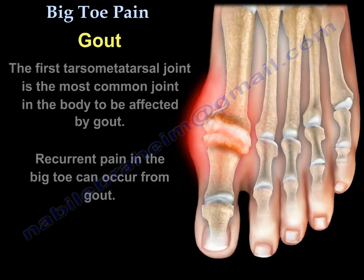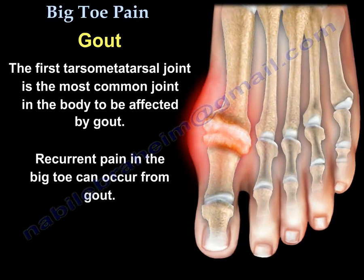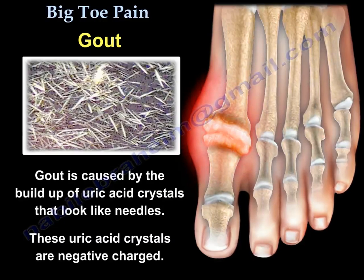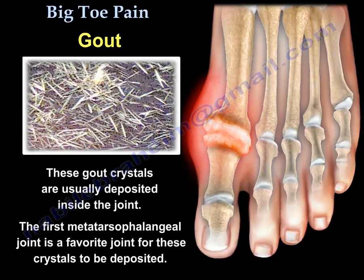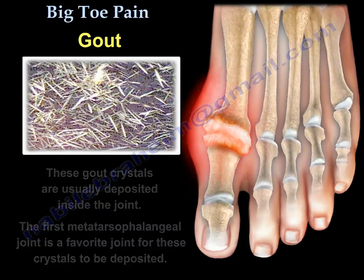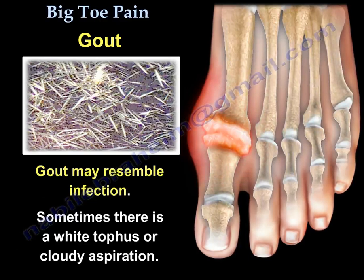The first metatarsophalangeal joint is the most common joint in the body to be affected by gout. Recurrent pain in the big toe can occur from gout. Gout is caused by a build-up of uric acid crystals that look like needles and are negatively charged. These crystals are usually deposited inside the joint, and the first metatarsophalangeal joint is a favorite site for deposition. Gout may resemble infection, and sometimes there is a white tophus or cloudy aspiration when the joint is aspirated.